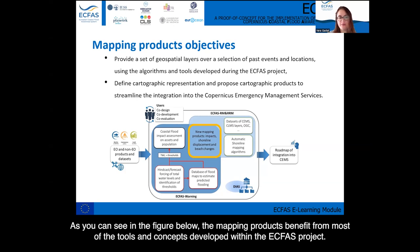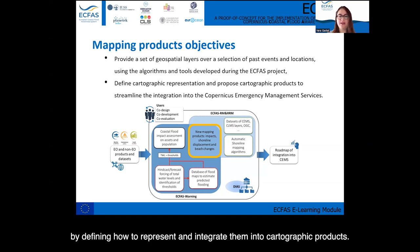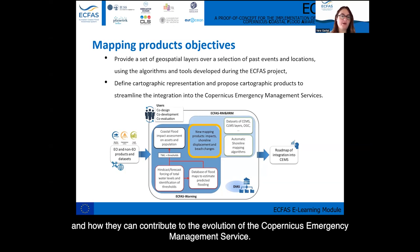As you can see in the figure below, the mapping products benefit from most of the tools and concepts developed within the ECFAS project. The second objective is to highlight the content and the potential of these datasets by defining how to represent and integrate them into cartographic products. This also contributes to understanding the added value of the ECFAS products and how they can contribute to the evolution of the Copernicus Emergency Management Service.